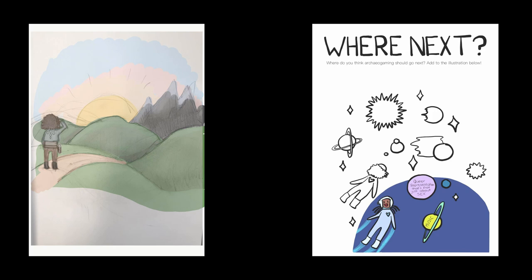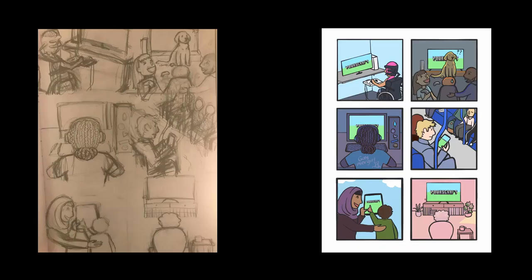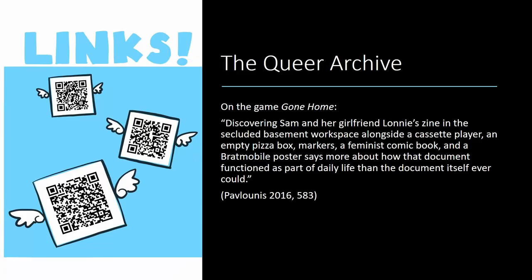Games themselves are interactive, and it seemed strange to have something about archeogaming that wasn't. This final illustration for me was about using art as a language. Floss's text is on the right-hand side of the double-page spread, and the image is on the left. Because people learn in different ways — essays do things other formats can't — we wanted something written in the English language and something written in the language of illustration, so that however you think, you can look at the art page or the text page and still hopefully get the same idea.